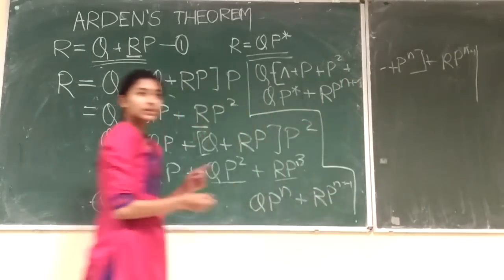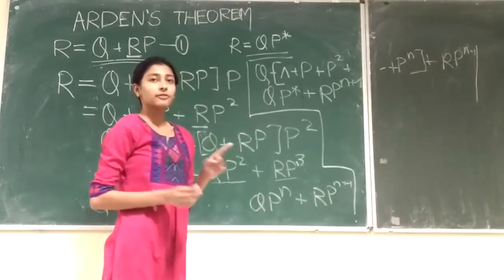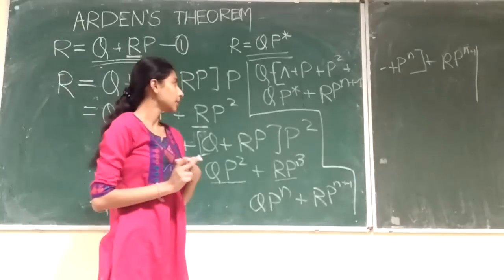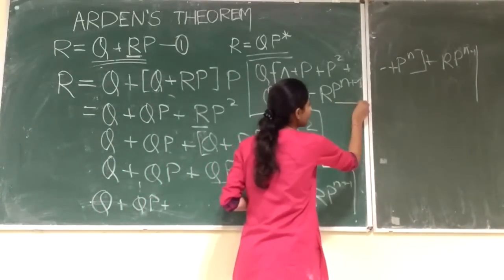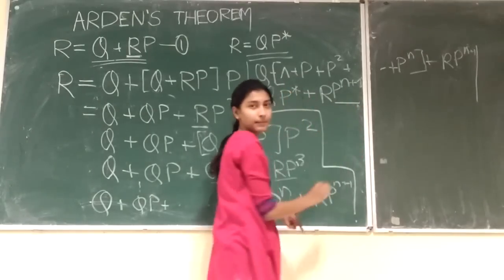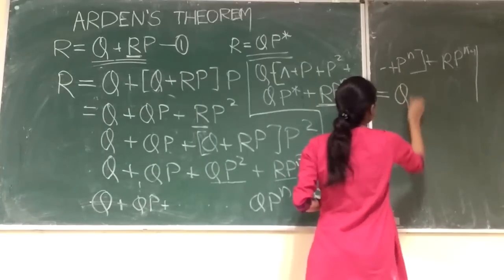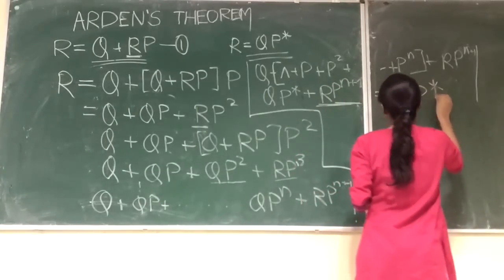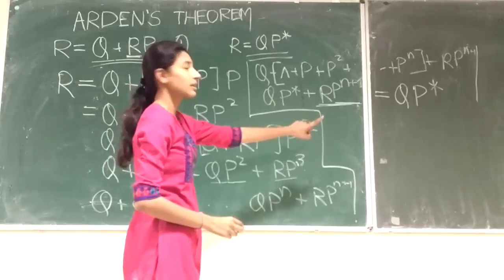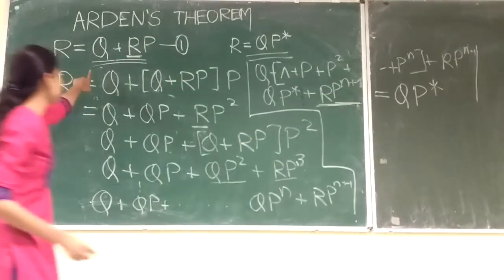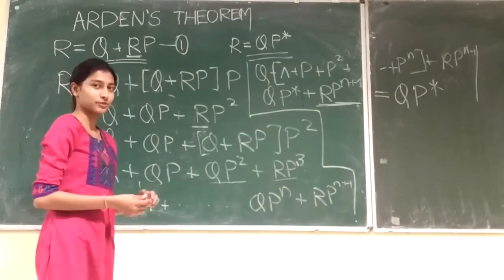Now we consider w as a string which belongs to the set R, and the string length of w is n. So there will be no term such that P has P to the power n+1. We can simply ignore this term, and this gives the answer as QP*. So we have proved that R = QP* is the only unique solution of the equation R = Q + RP. This is Arden's theorem. Thank you.